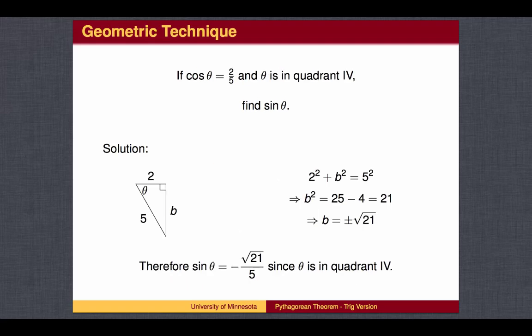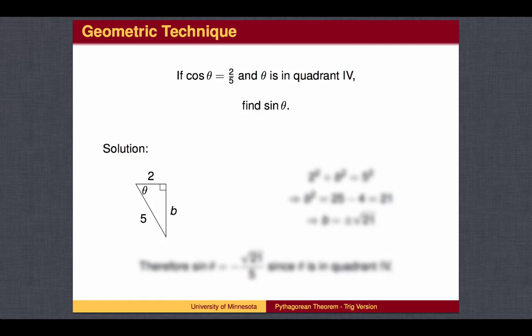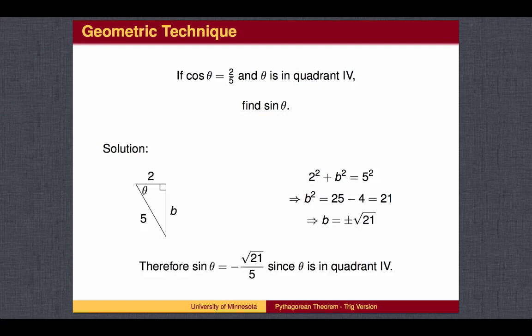Note that you could also solve these problems using the geometric definition. Instead of labeling the triangle with the hypotenuse equal to 1, you can label the triangle so that the adjacent side is 2 and the hypotenuse is 5 to make the value of cosine equal to 2 over 5. You can then find the missing side by the Pythagorean Theorem, and use the values of opposite over hypotenuse to find the sine of theta.